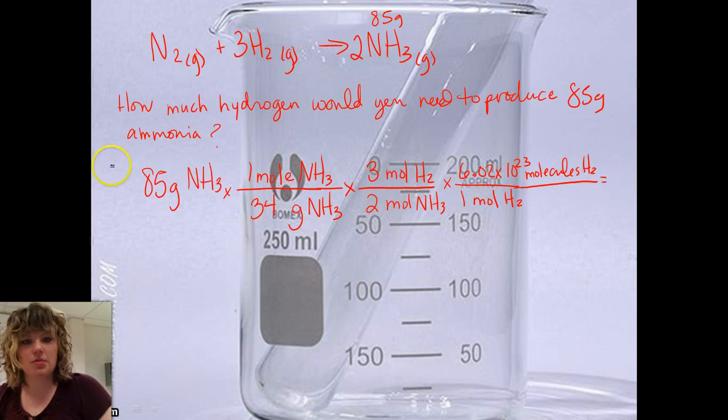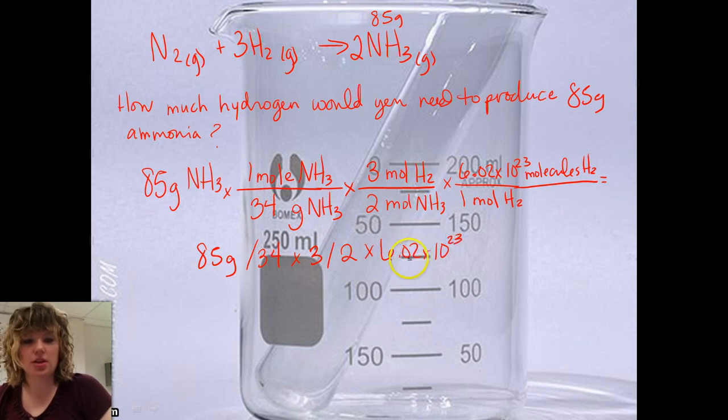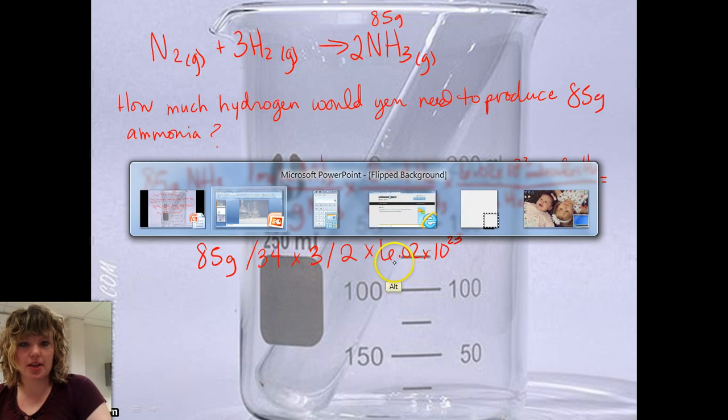And so we do this, we would take 85 grams. We would then divide that, because it's on bottom, by 34. Then we would have to multiply it by 3. Then divide that by 2. And then multiply by 6.02 times 10 to the 23rd. So let me pull up my calculator.